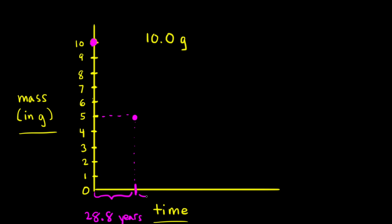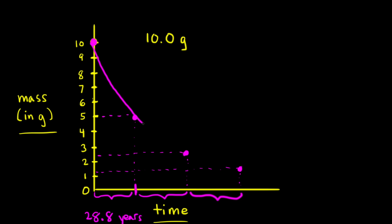If we wait another 28.8 years, we go from 5 grams to half of that, which is 2.5 grams. If we wait another 28.8 years, we'd go from 2.5 grams down to 1.25 grams. This graph shows exponential decay.